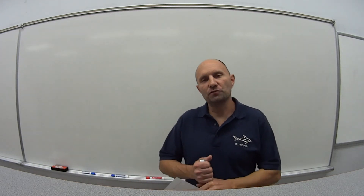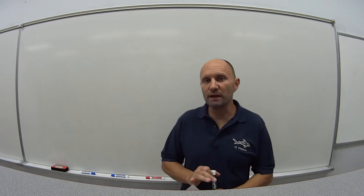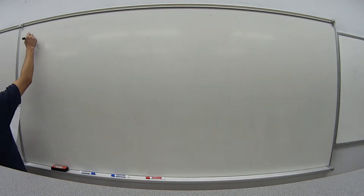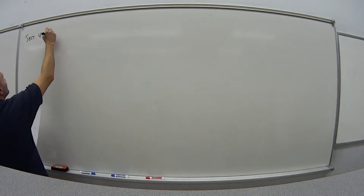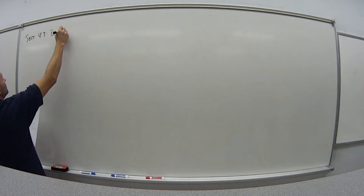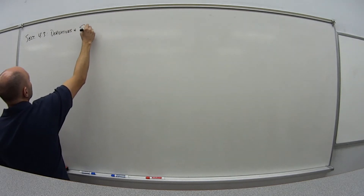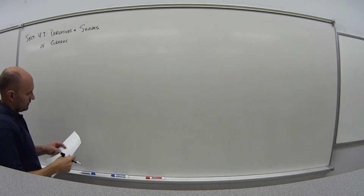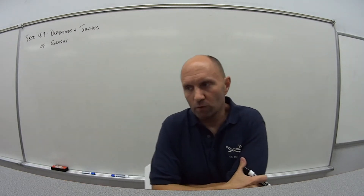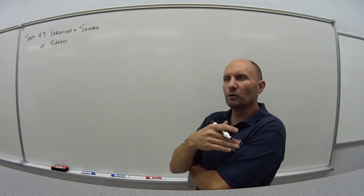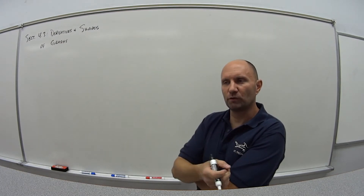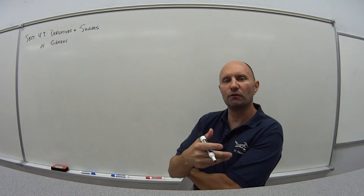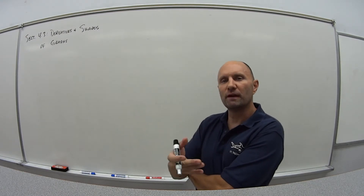Hi and welcome to section 4.3. This is the first of three videos for this section. In this section, 4.3, we're going to be looking at derivatives and the shapes of graphs. Specifically, if we're given some information about a derivative — first derivative, second derivative, etc. — how can we use that information to tell something about what the graph of the function actually looks like?